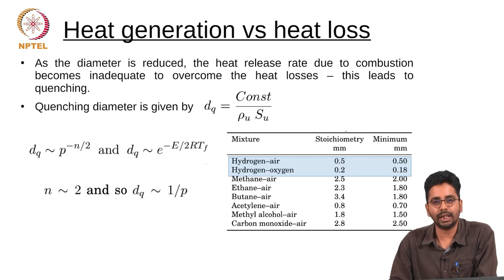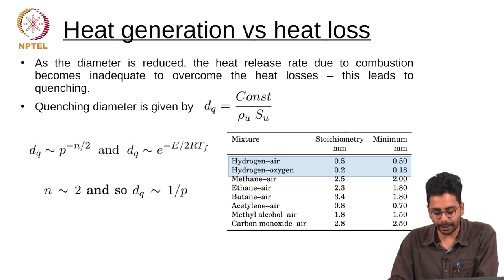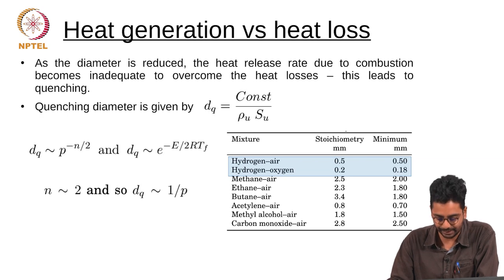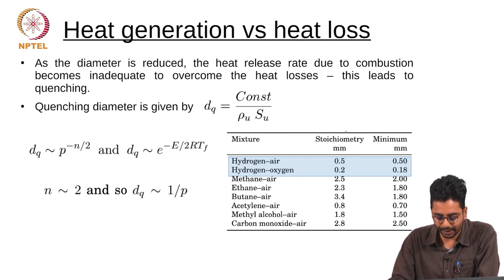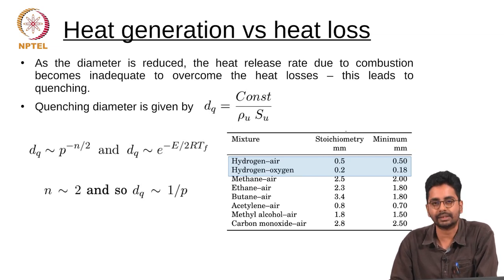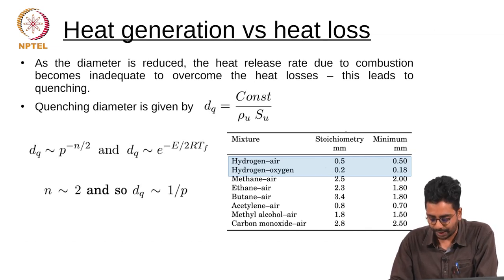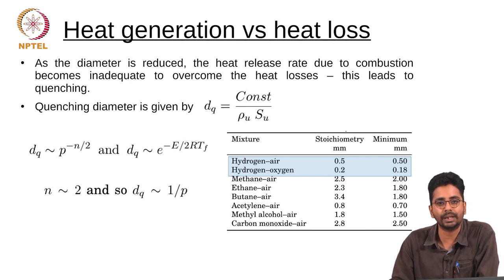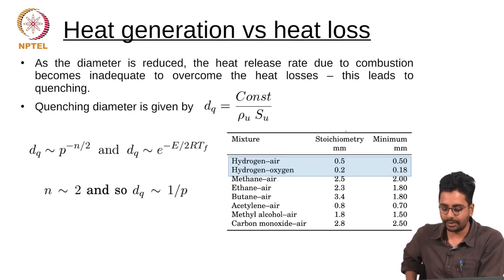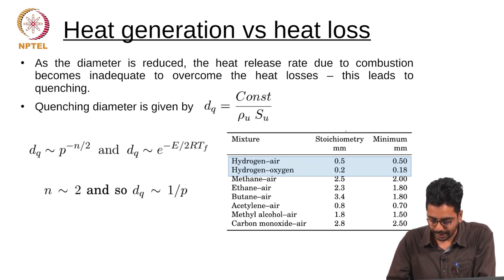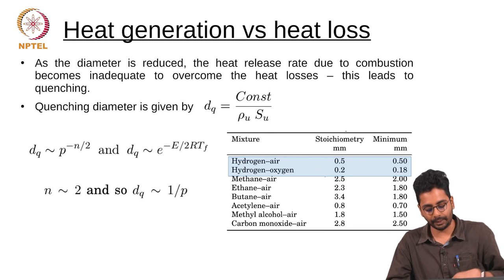Let us look at some typical values for the quenching distance. The more reactive the fuel, the higher the flame speed and the smaller the quenching distance. Hydrogen-air is very reactive, with a stoichiometric quenching distance of about 0.5 mm. Hydrogen-oxygen is more reactive still, with a quenching distance as small as 0.2 mm. Methane-air, not as reactive, has a quenching diameter of about 2.5 millimeters.